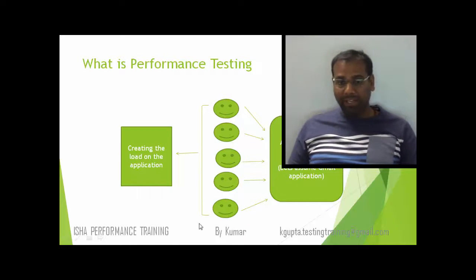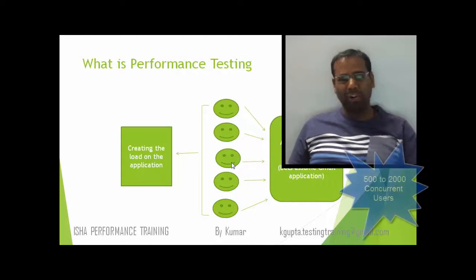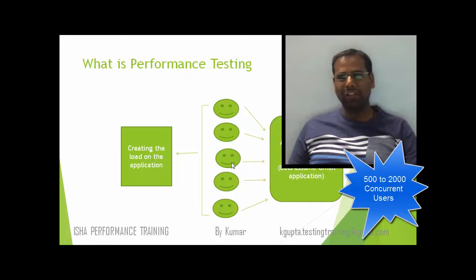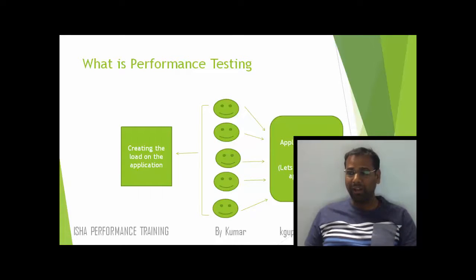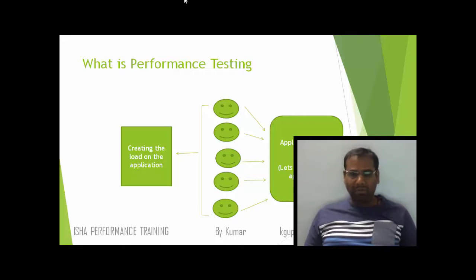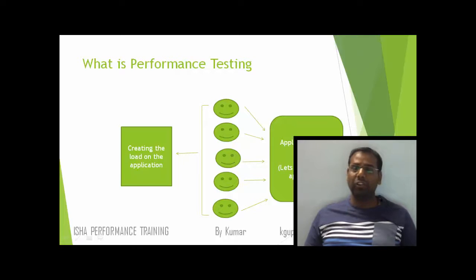In our example we are creating a load of five users, but in real-time applications this number is usually huge. On a moderate performance testing project you might have 500 to 1000 users, and in a big project you might have 1500 or 2000 users. Typically 500 to 1000 is normal. So whether you use five, 50, or 500 users, you are creating load on the application.